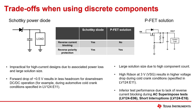Traditionally, discrete solutions like Schottky diode and PFET have been used for reverse polarity protection and reverse current blocking, but they have some drawbacks. A Schottky power diode solution provides both RCB and RPP but is impractical for high current designs due to high power loss and large solution size. For example, using a Schottky diode results in less headroom for downstream DC-DC operation during automotive cold crank conditions due to high forward voltage drop. On the other hand, a PFET solution only provides RPP. It is bulky due to high component count and also causes high voltage drop during cold crank conditions due to increased RDS-on. Due to lack of RCB, it gives inferior performance during automotive OEM tests like AC superimpose and short interruptions.